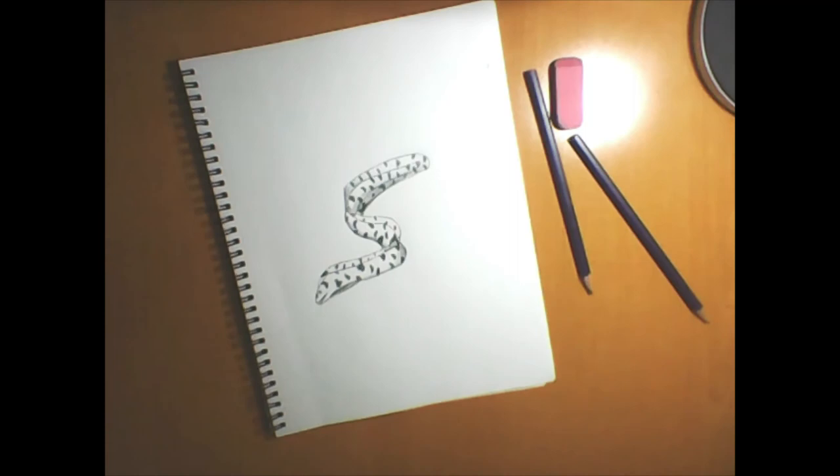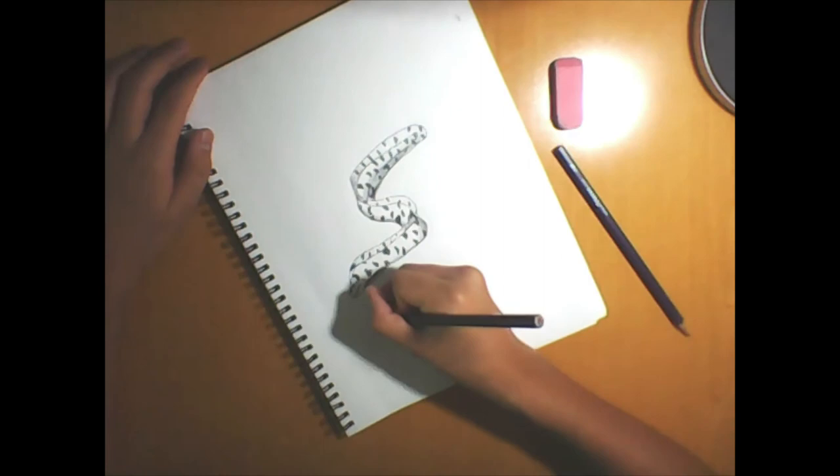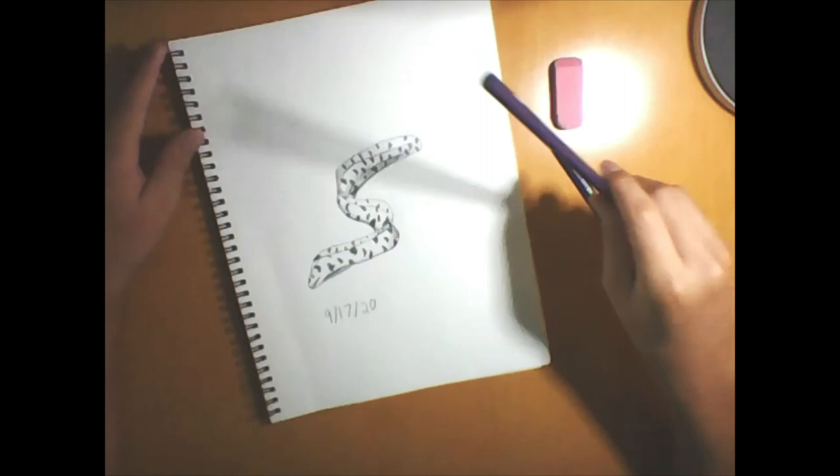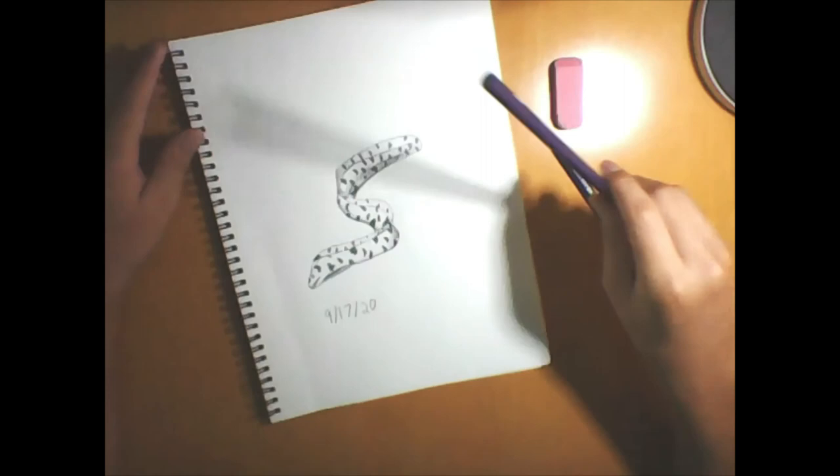There, so there it is, a moray eel. So maybe you want to put today's date on it which is 9/17/20, and then put your name at the bottom. And that is it, that is how you draw a moray eel.